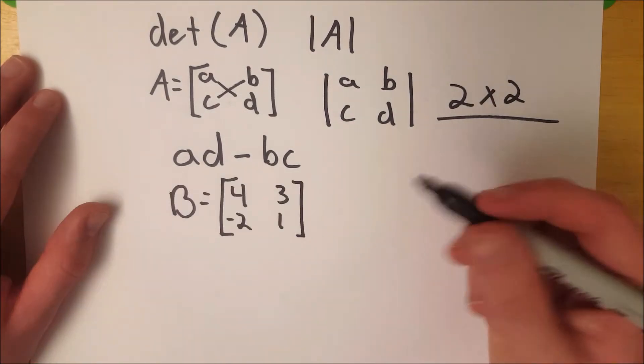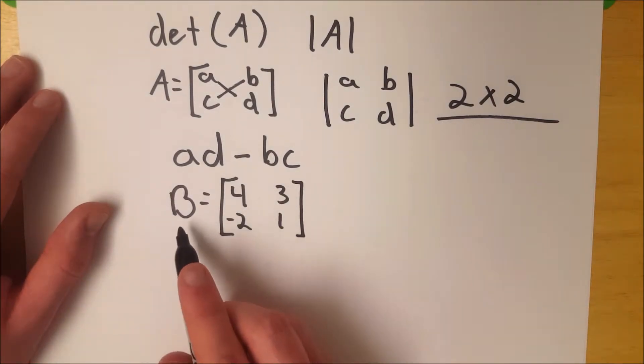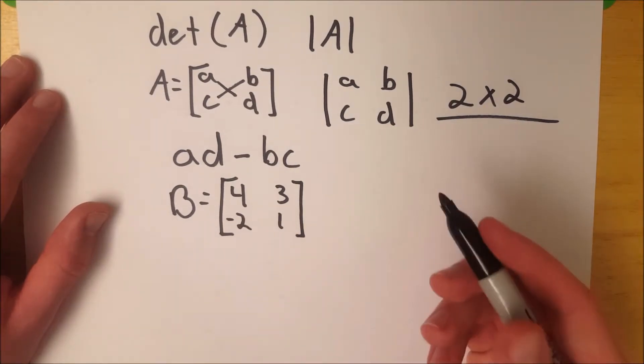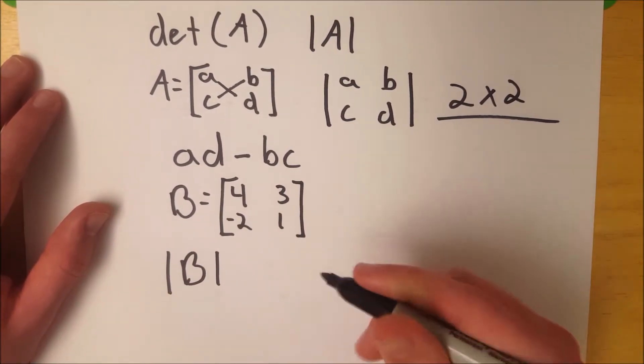Let's look at a real example. So let's say we have matrix B, which is equal to this, and we want to find the determinant of B.